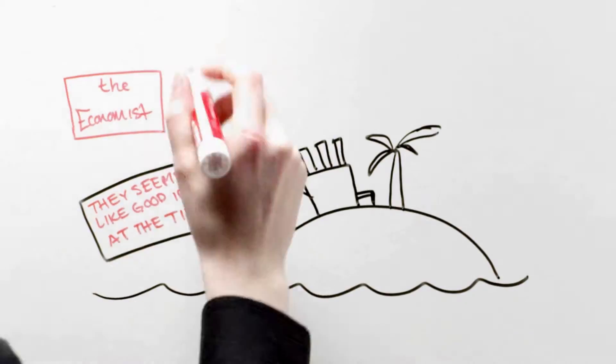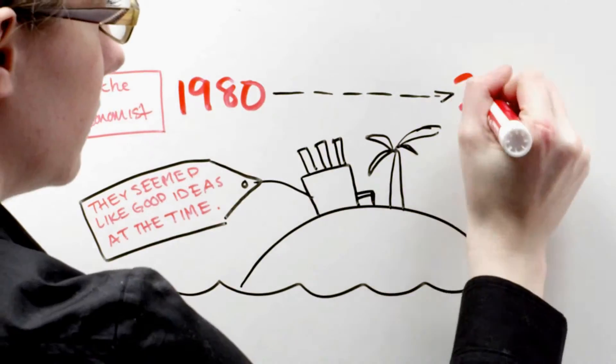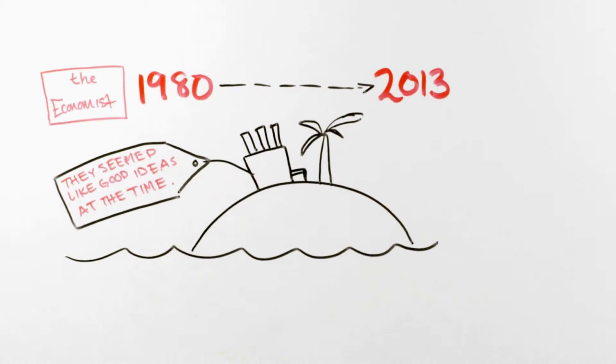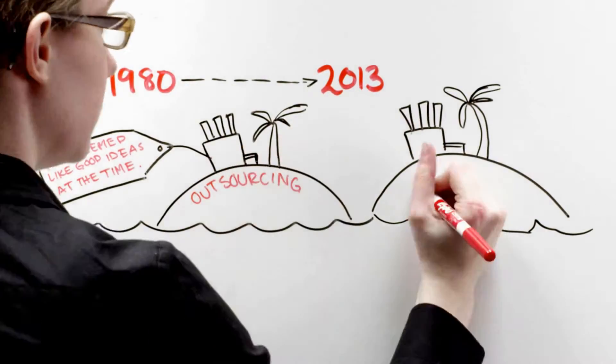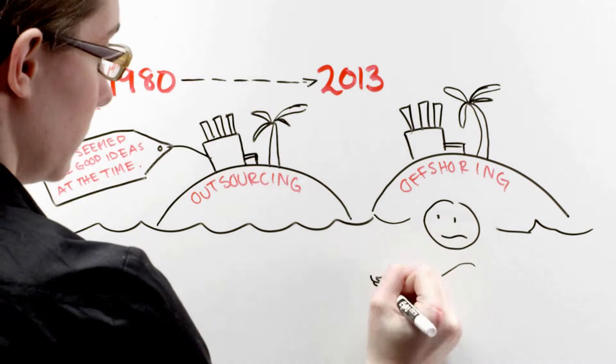According to The Economist, this trend, which began in the 1980s, may finally be winding down. The main reason is that the savings once realized by outsourcing, hiring domestic or foreign contractors, and offshoring, moving work overseas, aren't what they used to be.